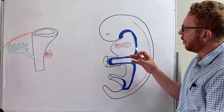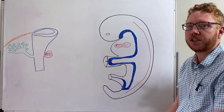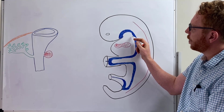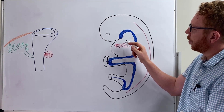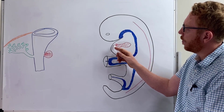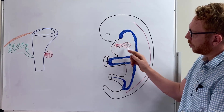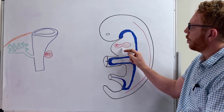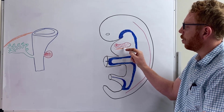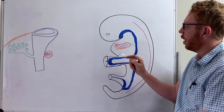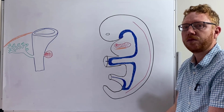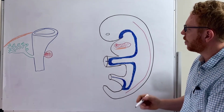Before we get going, I just want to illustrate an important structure that will demarcate the thorax from the abdomen. Coming from the neck, there's going to be tissue that will loop around the developing heart and come to lie just underneath it. This is what we call the septum transversum — an important structure that will be the precursor for at least one part of the diaphragm.